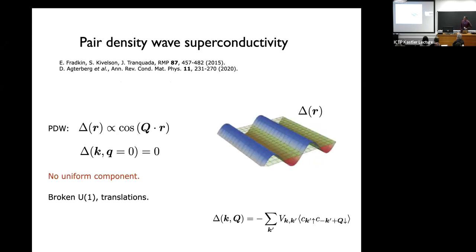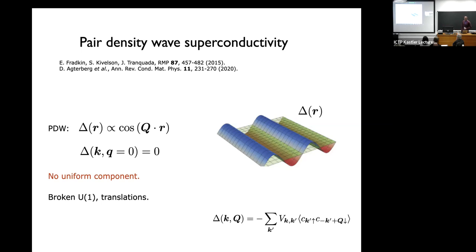A related state to the Larkin-Ovchinnikov state: often the LO state is accompanied by a uniform superconducting component, but if there were no uniform component, this Larkin-Ovchinnikov state has been named pair density wave order. You can think of the LO state as two FF states — e to the iqr and e to the minus iqr — and then you get a cosine out of this.